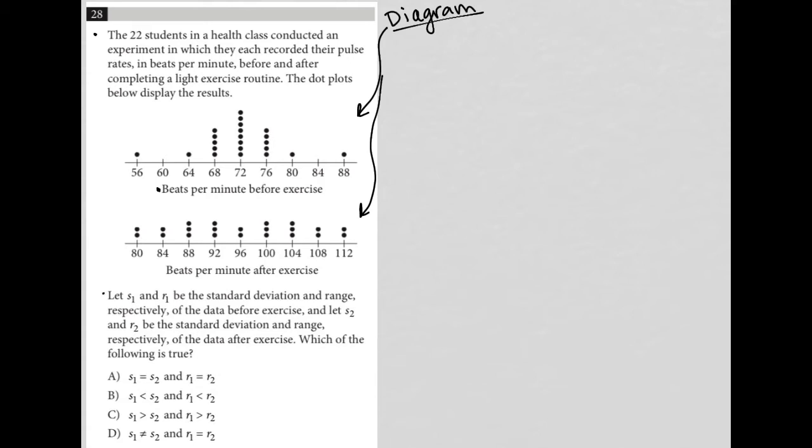So down here, let S1 and R1 be the standard deviation and range respectively. So I'm just going to write that down. So S1 equals standard deviation and R1 equals range. Okay. Of the data before exercise. Okay, so this is before exercise. And let S2 and R2 be the standard deviation and range respectively of the data after exercise. So S2, R2 is post exercise. Same data. Standard deviation and range. Which of the following is true?